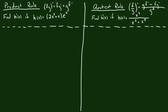I have written out the product rule up here so we can all see it. If you have two functions f and g being multiplied together, we think of the first function as f and the second function as g. If you take these two functions and need the derivative, you assemble it as: the original function f, times the derivative of g, plus the original function g, times the derivative of f.